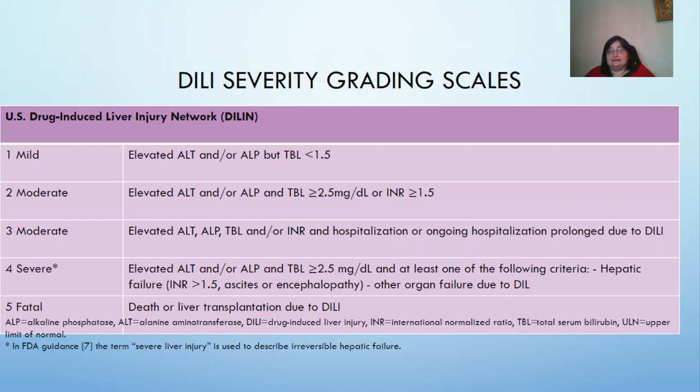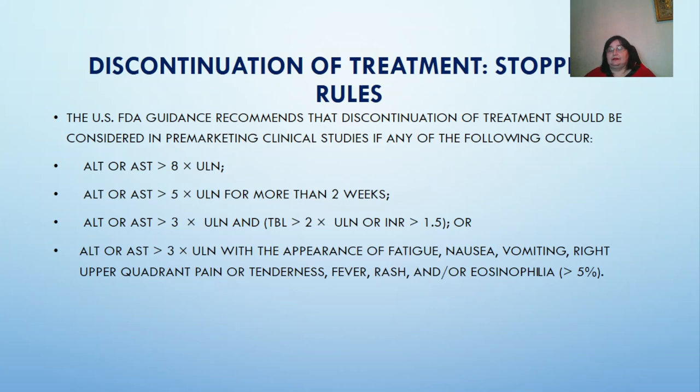Key abbreviations: ALP is alkaline phosphatase, ALT is alanine aminotransferase, INR is international normalization ratio, TBL is total serum bilirubin, and ULN is upper limit of normal.